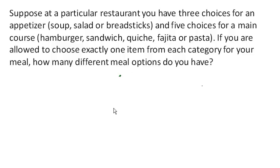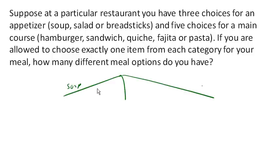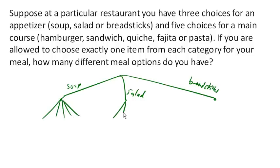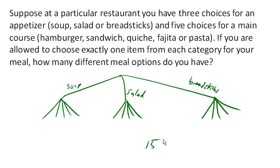So you start out here and say: how many choices do I have for my appetizer? I have three choices — three different directions I could go. I could go the soup direction, salad direction, or breadsticks direction. Then at each of those points, I now have to decide upon a main course, and for each of those I have five choices emanating out. So how many total choices do I have? There are five choices here, another five here, another five there — we end up with a total of 15 choices.